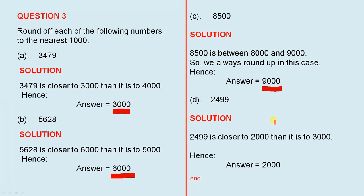And number D, 2499. Now 2499 is closer to 2000 than it is to 3000. So when we round down, we round down to 2000.